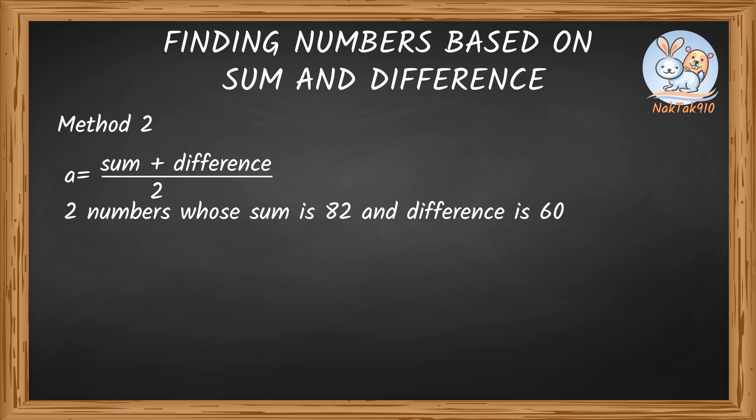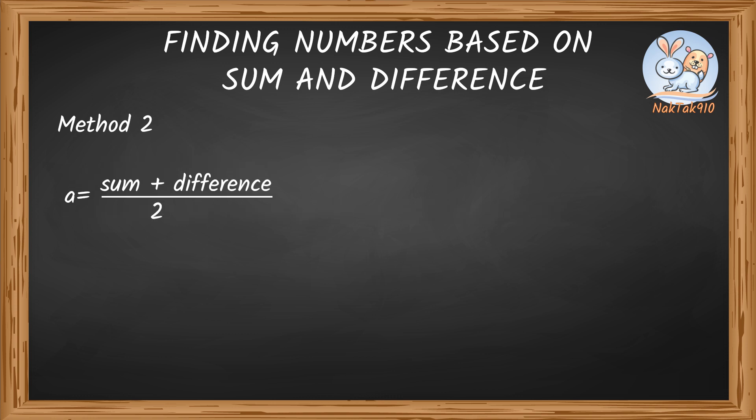Let's find the first number using a equals sum plus difference divided by 2. Adding sum and difference equals 82 plus 60, which is 142. Then divide this, 142, by 2. That means one number is 71.